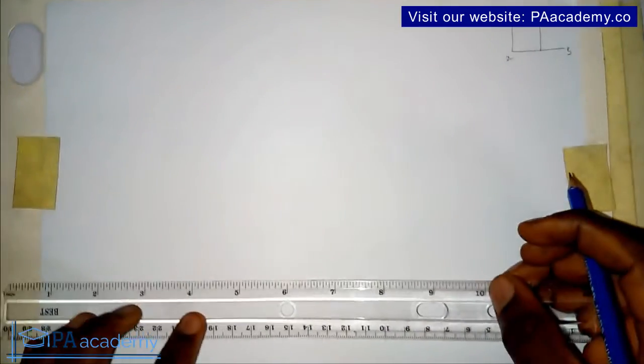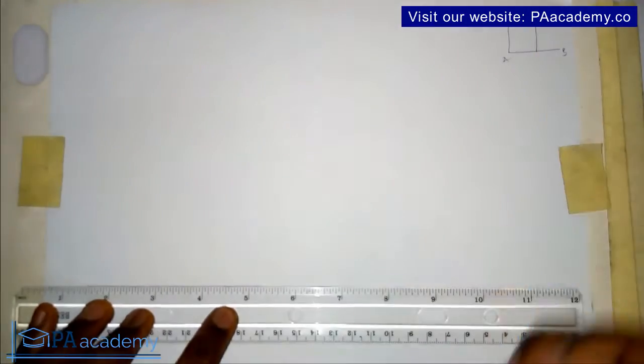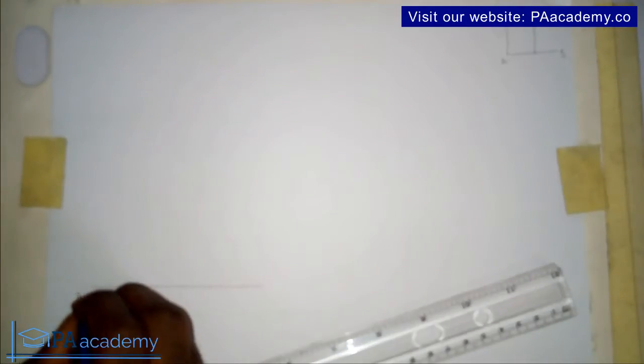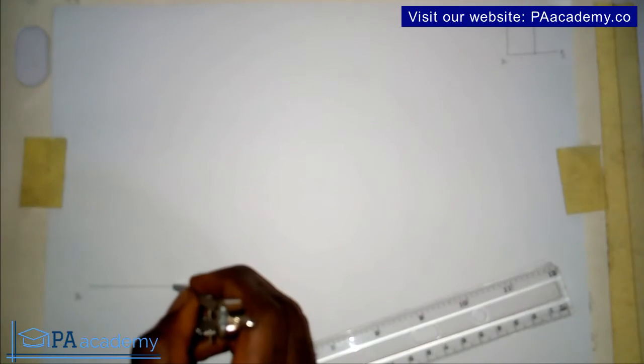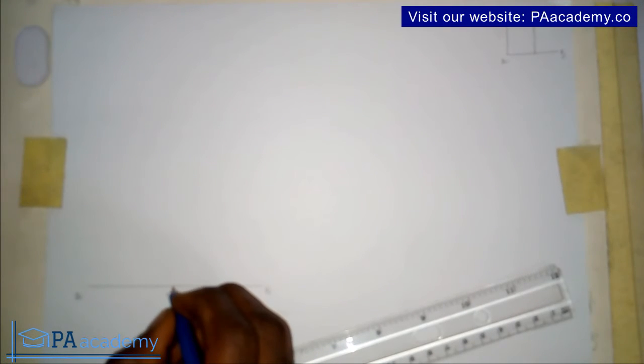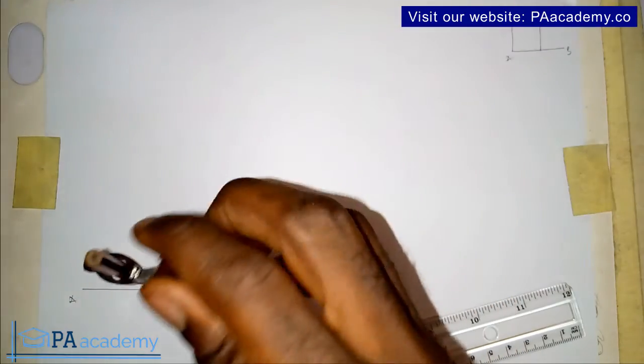Thank you very much if you've just subscribed. Now let's look at this first example. Let's say I have a straight line — let me call this line AB — and we are asked to draw a line that is perpendicular to line AB from this point, and let's call that point C. So from this point, since we know the point from which we are drawing a perpendicular line, you bring in your compass at any convenient length and you are going to draw a semicircle on that line.